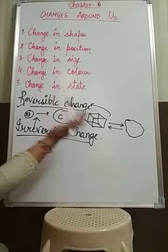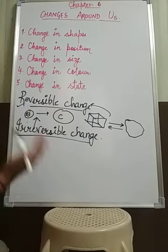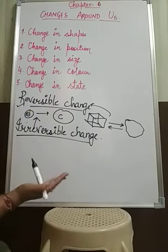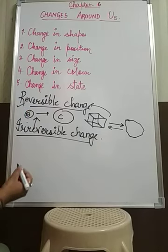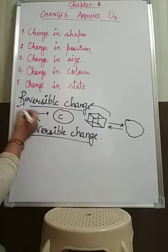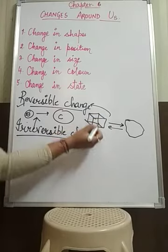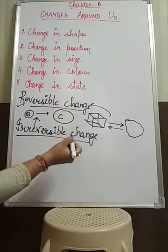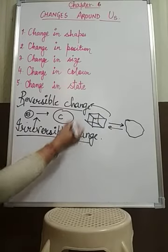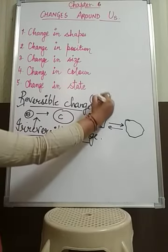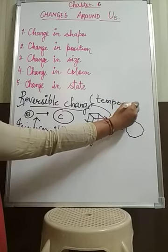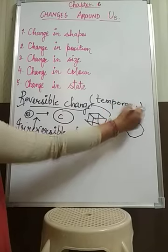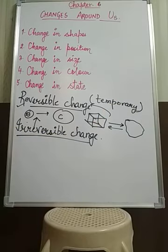Examples of reversible changes include melting of ice, melting of butter, melting of candle. Since they can reverse back to their original state or original condition, they are also known as temporary changes.